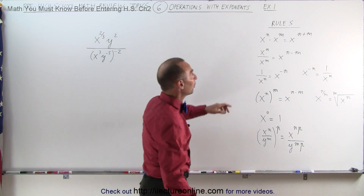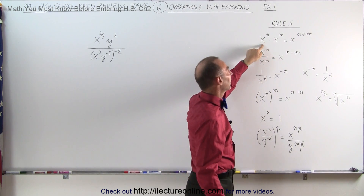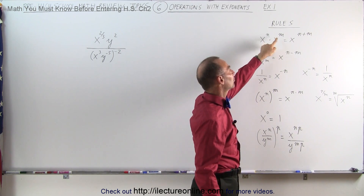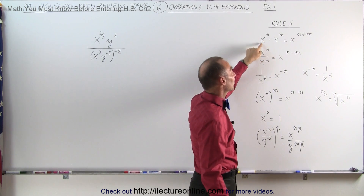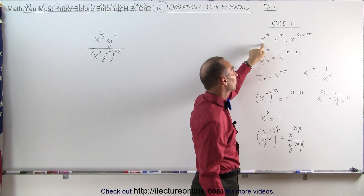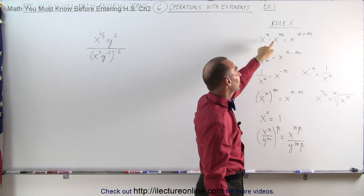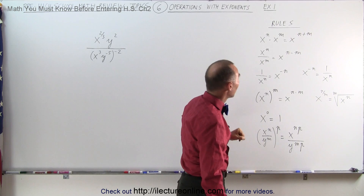For example, when you multiply two numbers together and they have different exponents but the same base — this is called the base and this is called the exponent — the result is equal to x raised to the sum of the exponents.